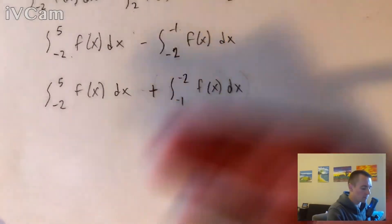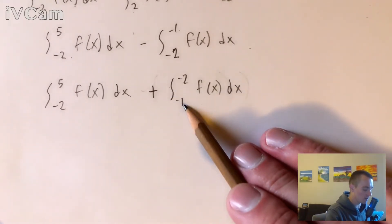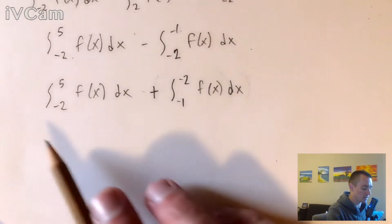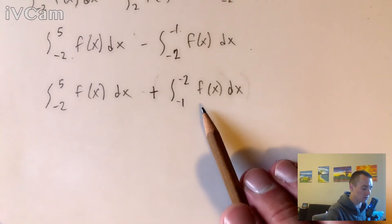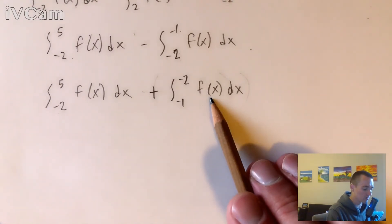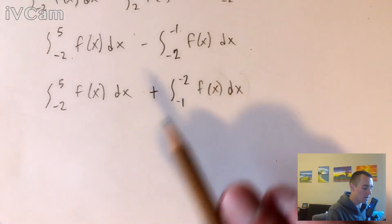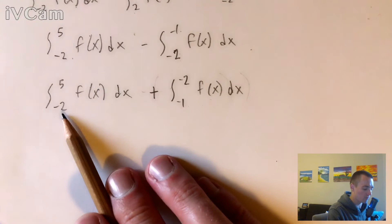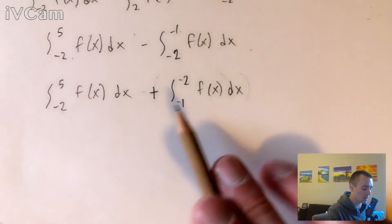Now we can reuse that same property that we did before because the upper bound of this one is the same as the lower bound of this one. Basically, this integral is taking the area under this function f(x) from -1 to -2, and then this one is taking the area from -2 to 5. So the whole thing is just going to go from -1 to 5.